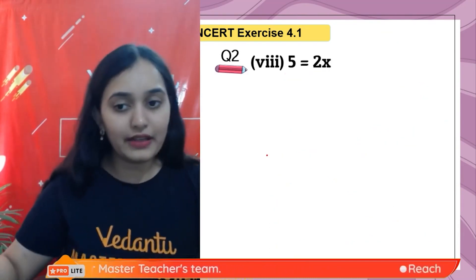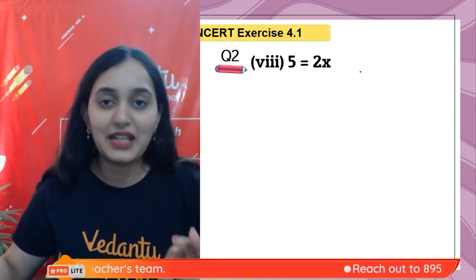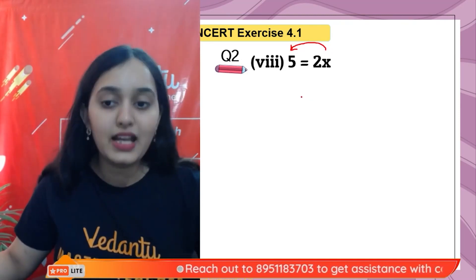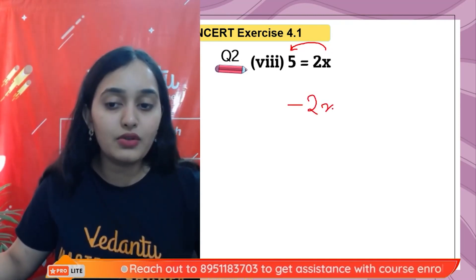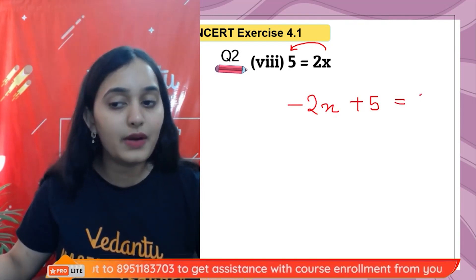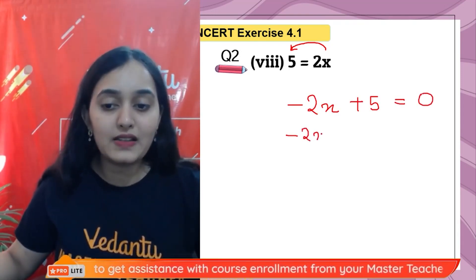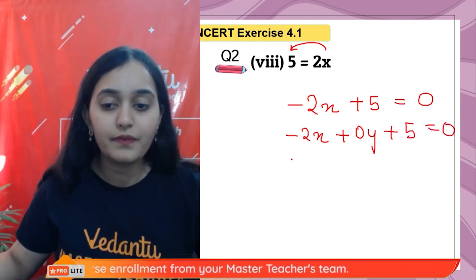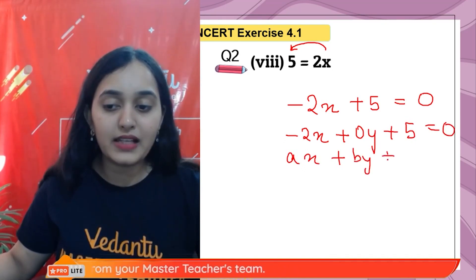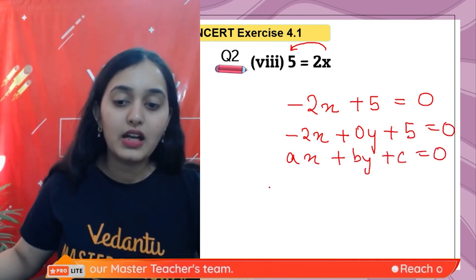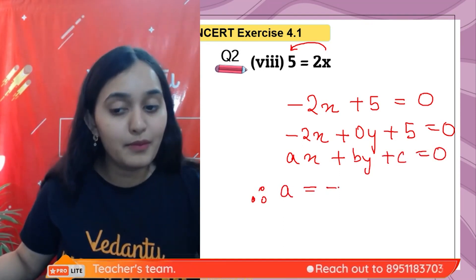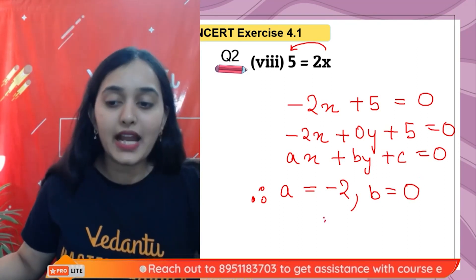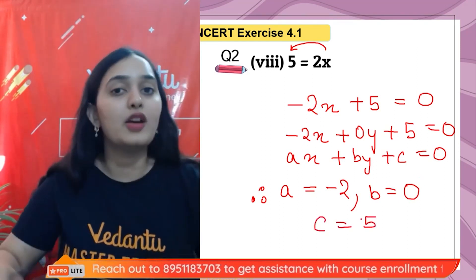The last question: 5 = 2X. Bringing 2X to this side, it becomes −2X + 5 = 0, which means −2X + 0·Y + 5 = 0. Equating with AX + BY + C = 0: A = −2, B = 0 because there is no Y term, and C = 5 — a positive constant.